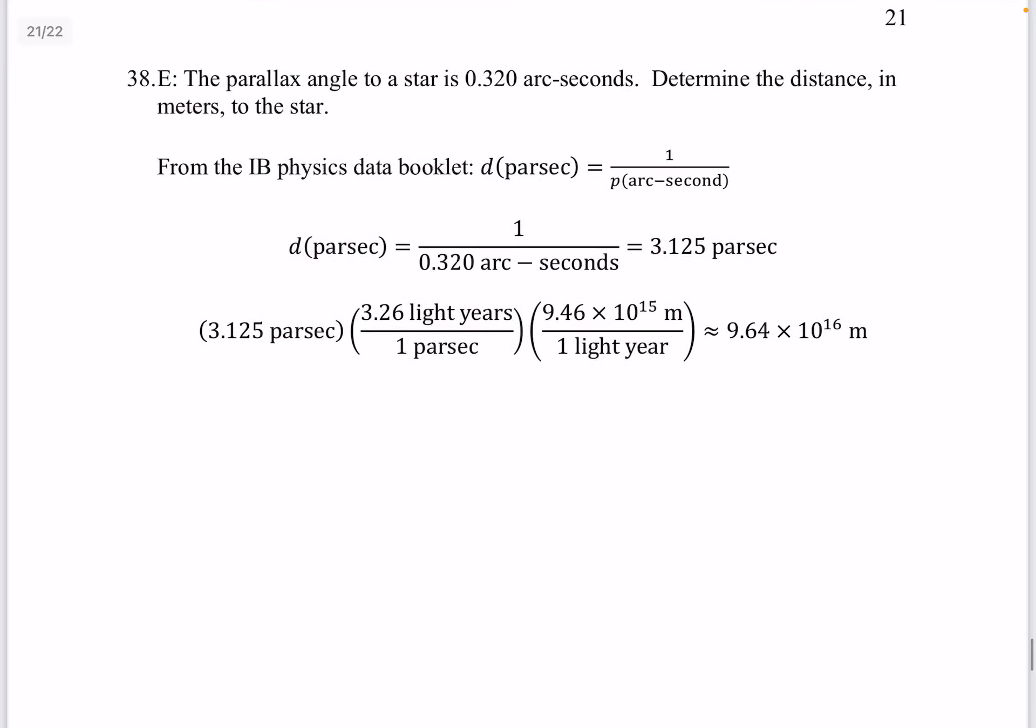Question 38. The parallax angle to a star is 0.320 arc seconds. Determine the distance in meters to the star. So we just used the equation.